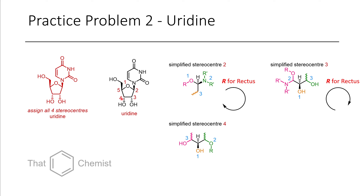Moving to stereocenter 4, we stick the hydrogen in the back — this is flipped around just like the previous example. We have an oxygen, which gets priority. Then we have an alcohol versus an ether. Because the ether has a carbon sticking off the oxygen whereas the alcohol only has a hydrogen, priority goes to the ether. Going one, two, three — in this case, we have sinister.